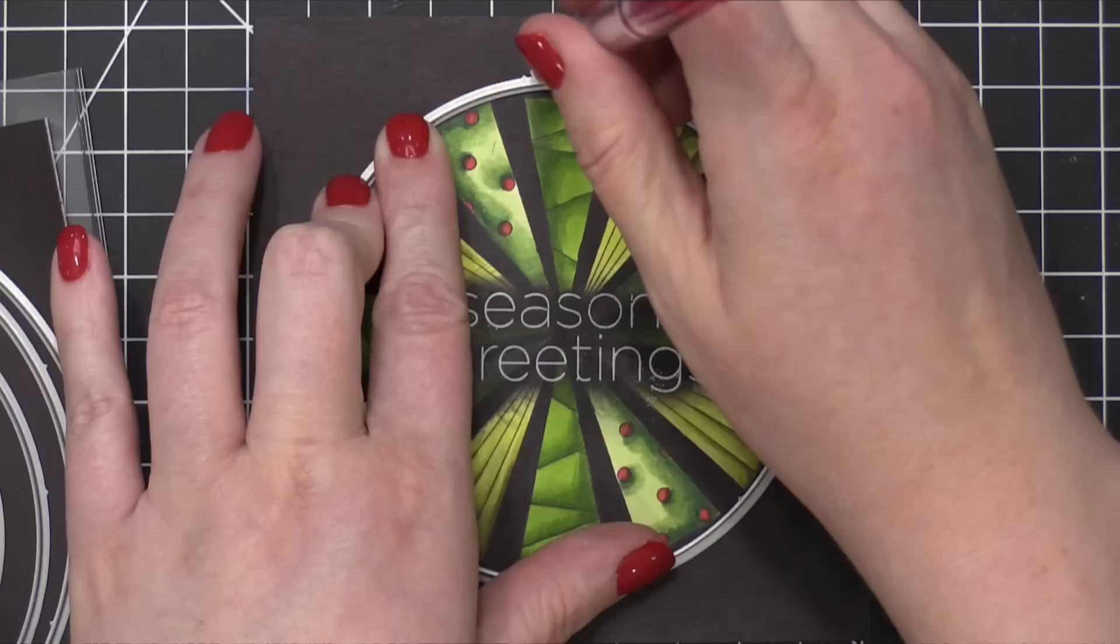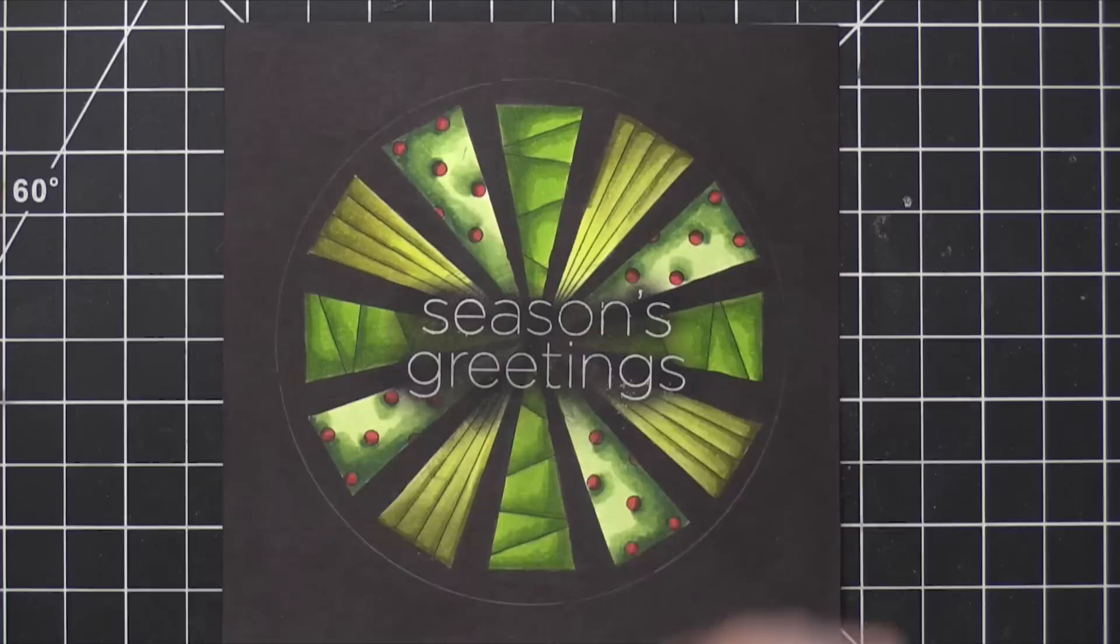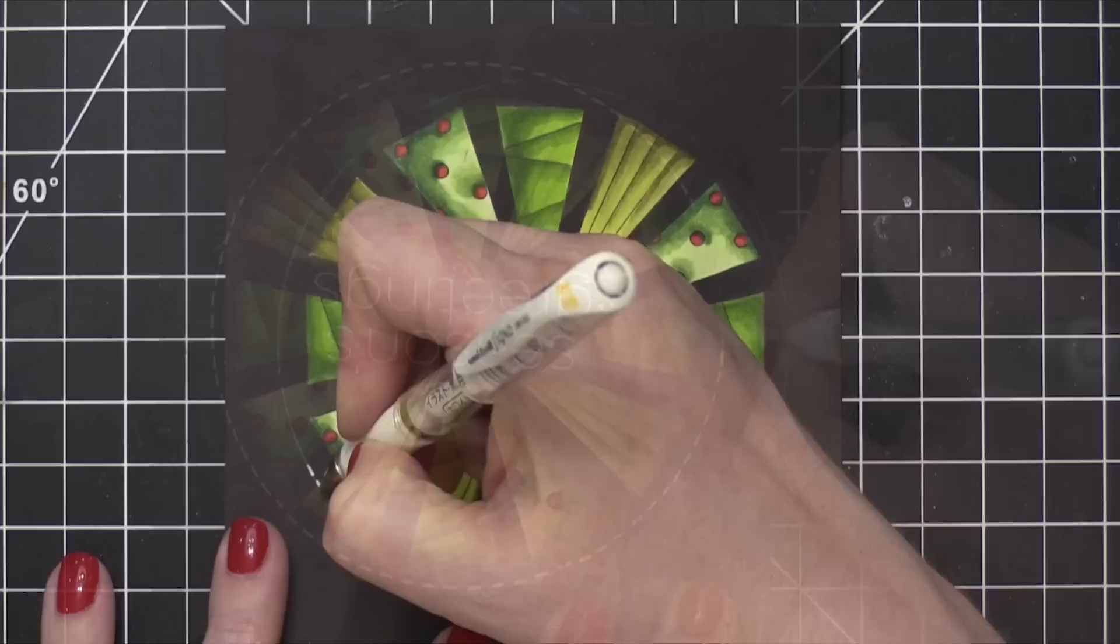I'm actually going to be using a white gel pen and adding a border around the outside edge. So I used my pencil, traced around that circle, and then I used a Uni-ball Signo Broad white gel pen and drew on a dashed line.